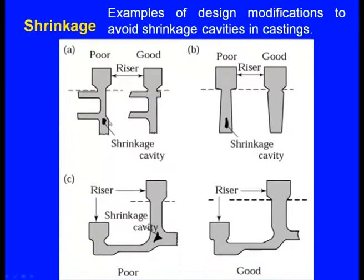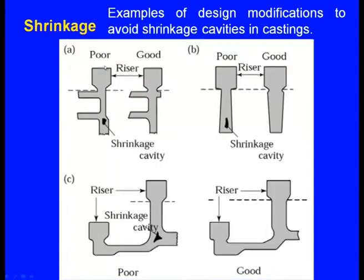Sometimes the drawing supplied by the customer may not be adequate to prevent shrinkage defects. For example, if the casting has a section that is much thicker compared to another, the riser feeds the bottom portion and solidification propagates upward. The thinner section will solidify first before the thicker section freezes.